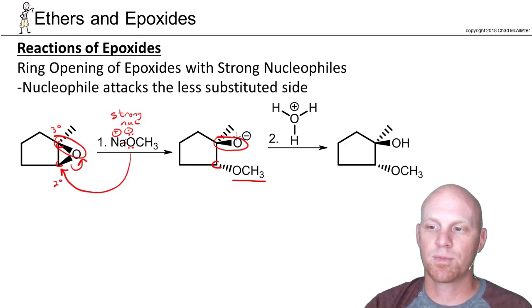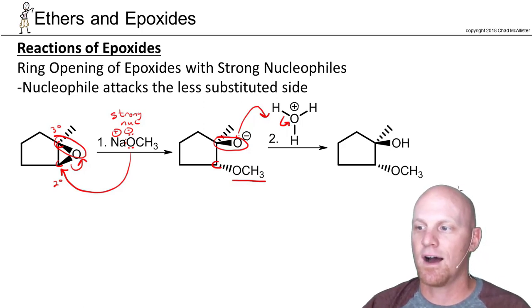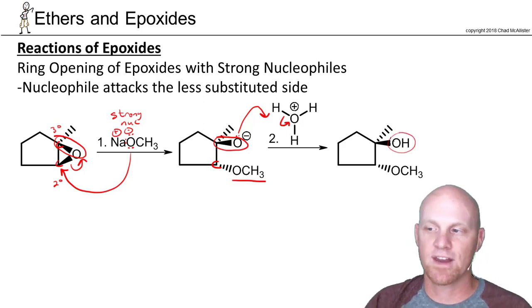From here we're simply going to do a proton transfer reaction. Add some H3O+ in the second step here to do a proton transfer and end up with an alcohol.